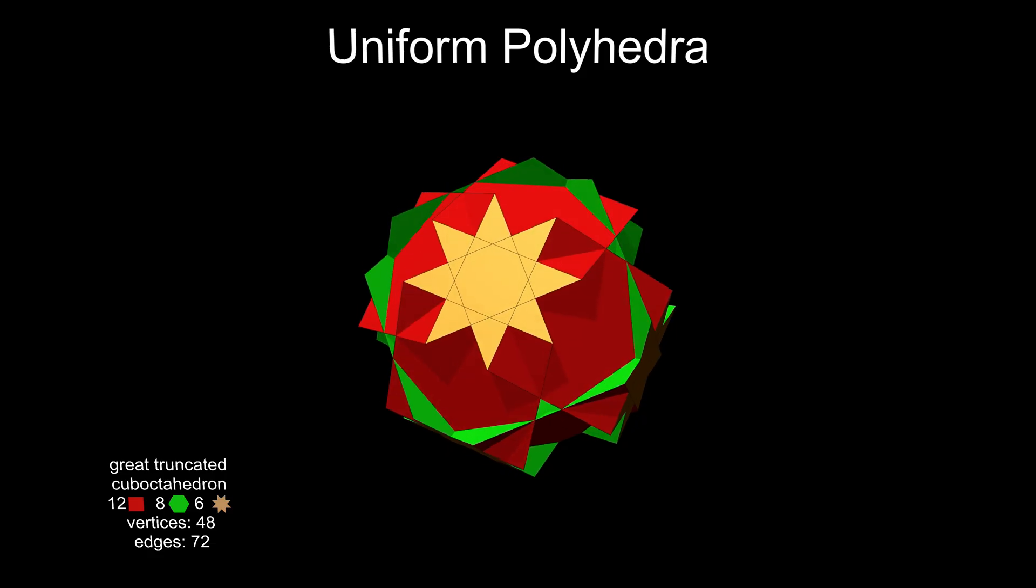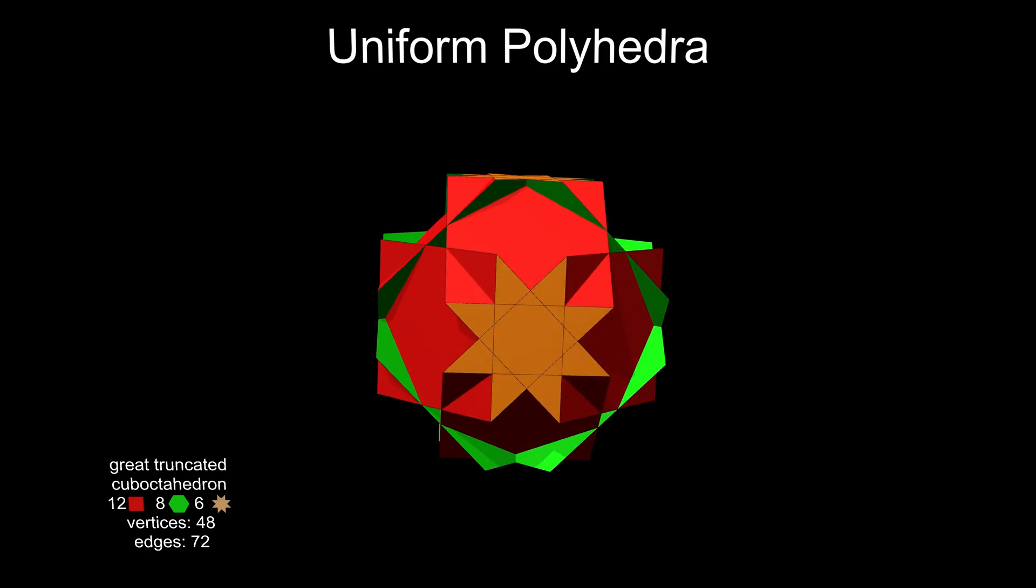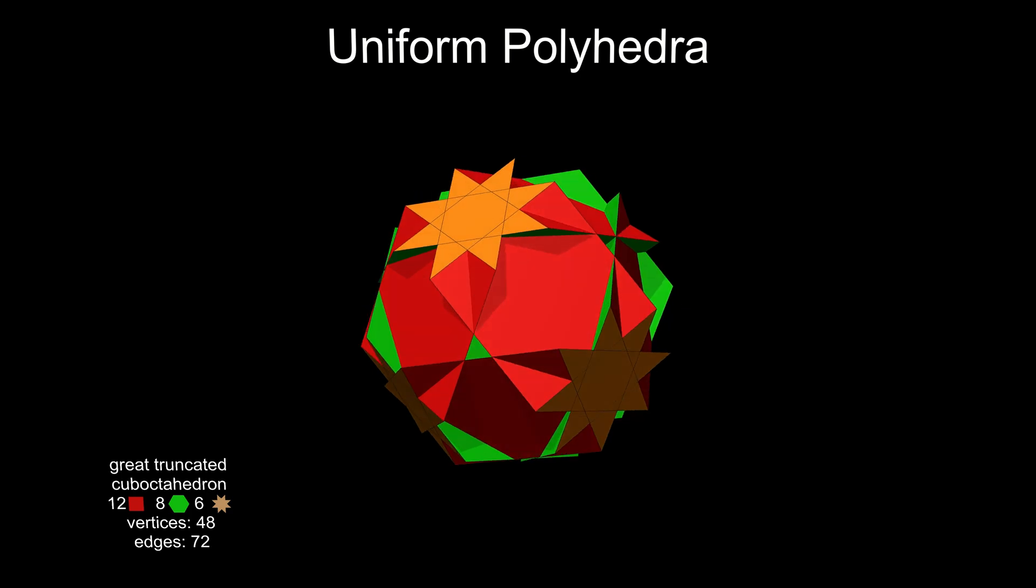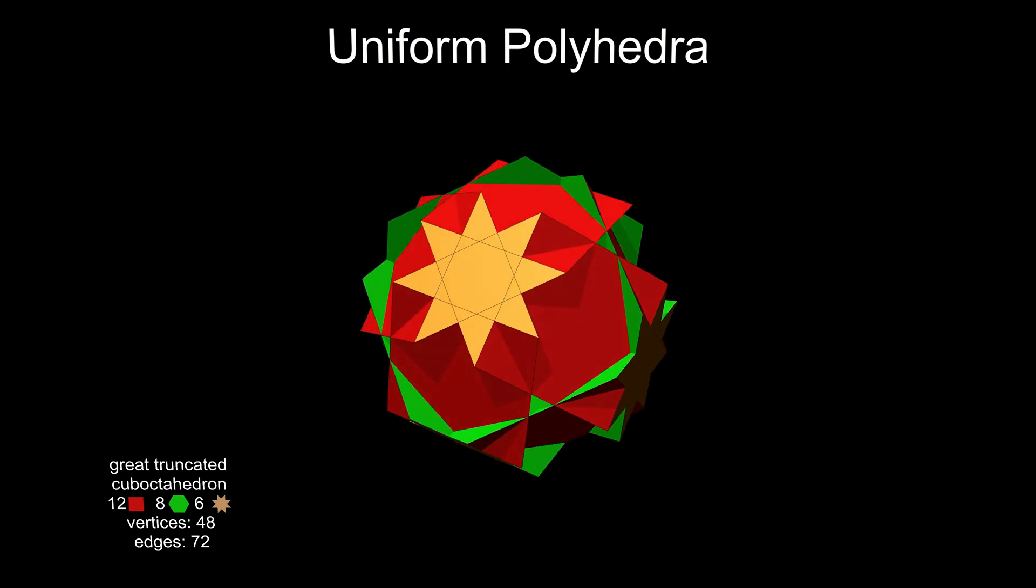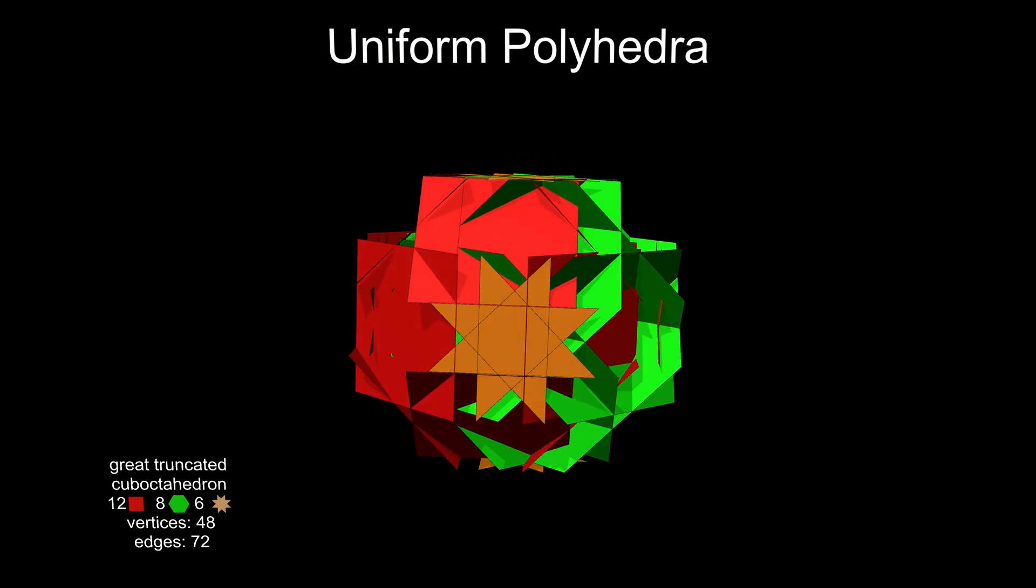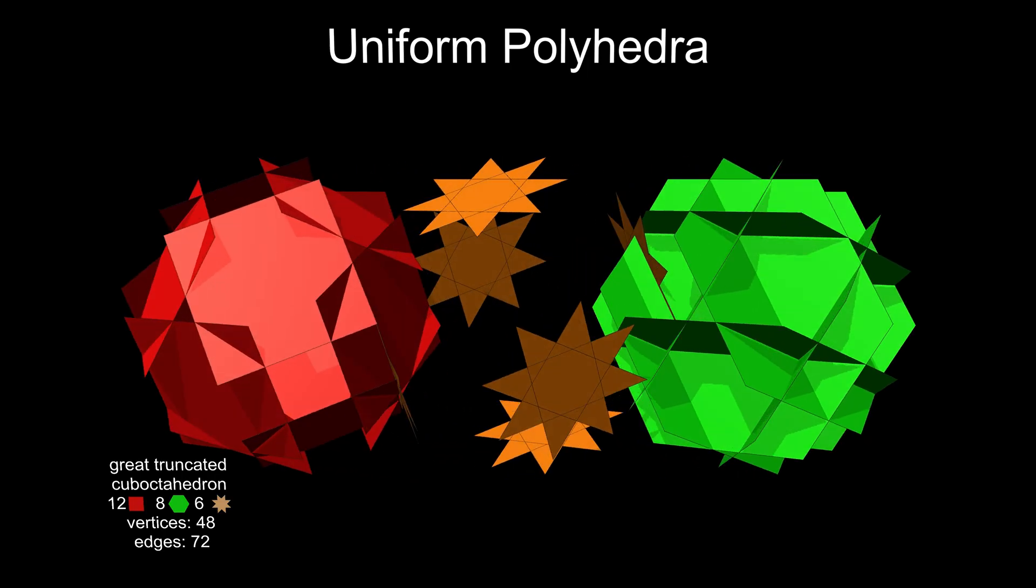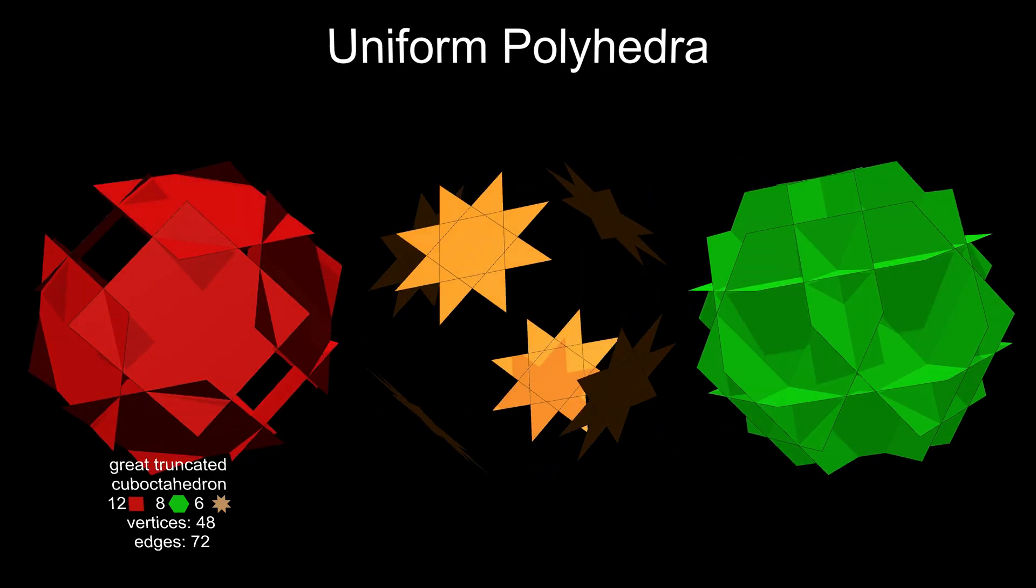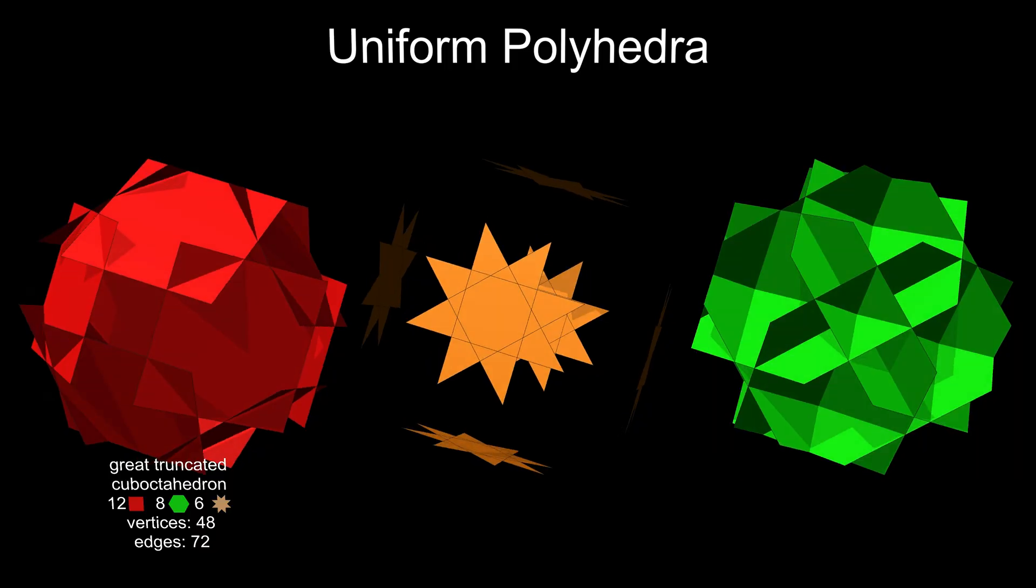We didn't add or remove any faces, vertices, or edges in this process. So this polyhedron is topologically the same as the cuboctahedron, despite its very different appearance. Viewing the different face types separately might help understand the structure of this polyhedron.